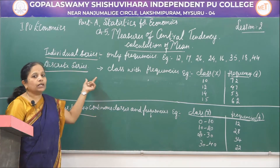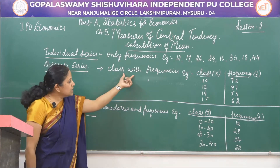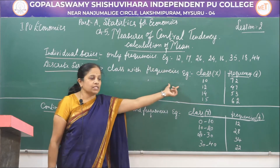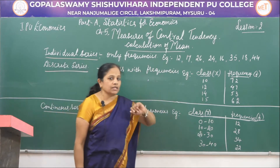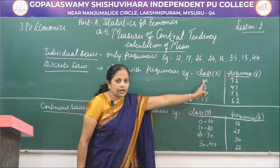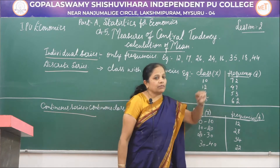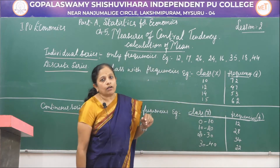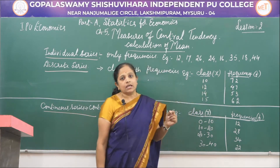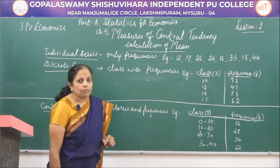The second one is discrete series. Here it is one which has both classes as well as frequencies. It is a class with frequency. The classes are individual — they are not continuous. They are only individual numbers, and as against them, there are the numbers or frequencies. Using these classes and frequencies, we calculate mean, median and mode.